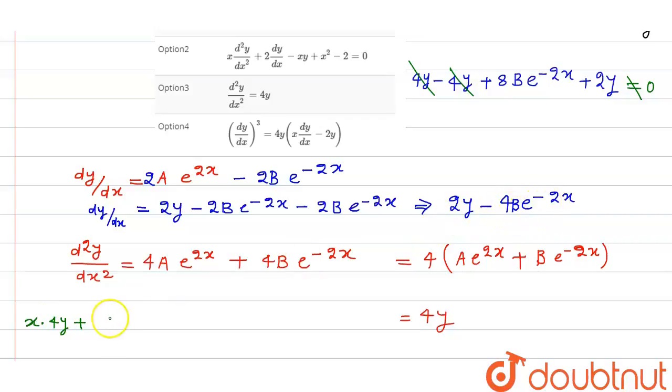That is 4y and this is minus 8b e to the power minus 2x, minus this is minus xy plus x² minus 2.